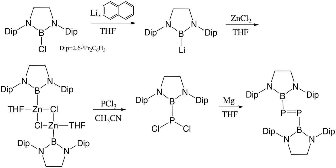Natural Bond Orbital (NBO) analysis shows the parent diphosphene has a well-localized P=P bond with bond order of 2.03, while all other unbulky substituted diphosphenes have lower bond orders. Bond orders of diphosphenes in which substituents have extra lone pairs are even lower, due to delocalization of lone pair electrons into the P=P π* orbital. NBO analysis indicates that the bond order of P=P in (NaP=P-Na) is only 1.62.